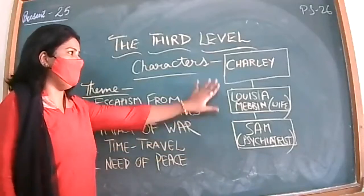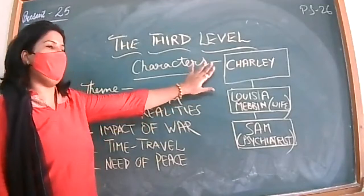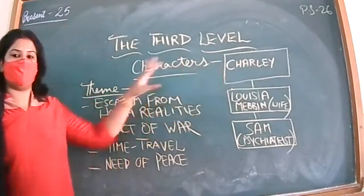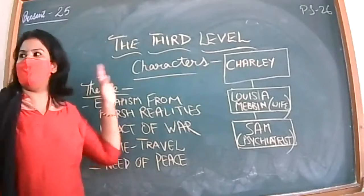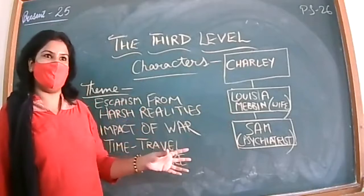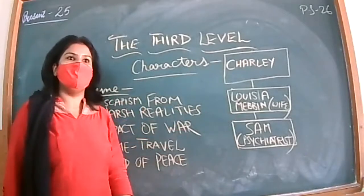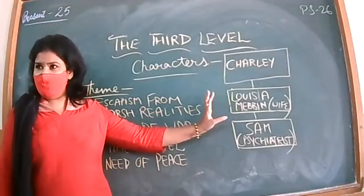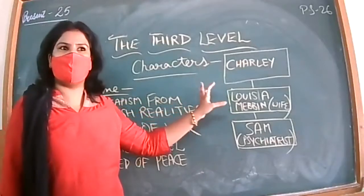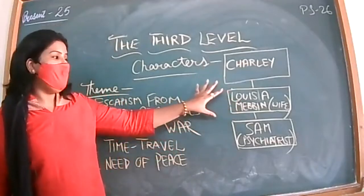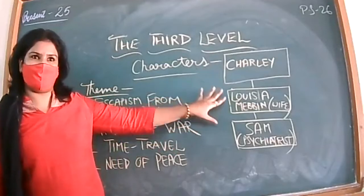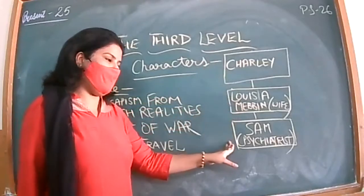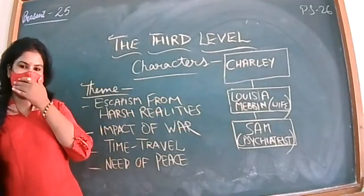Characters of The Third Level are Charlie, the protagonist and main character. He has a psychological problem of time traveling - he lingers between past and present to that level that he cannot differentiate whether he's in the past or present. Then we have Lucia Mebbin, a clever lady who perceives her husband is going through a psychological problem and suggests Charlie visit a psychiatrist, especially his friend Sam who is already a psychiatrist.